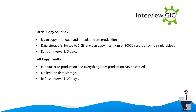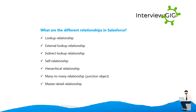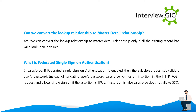What are the different relationships in Salesforce? Lookup relationship, external lookup relationship, indirect lookup relationship, self-relationship, hierarchical relationship, many-to-many relationship via junction object, and master-detail relationship. Can we convert a lookup relationship to a master-detail relationship? Yes, we can convert it only if all existing records have valid lookup field values.